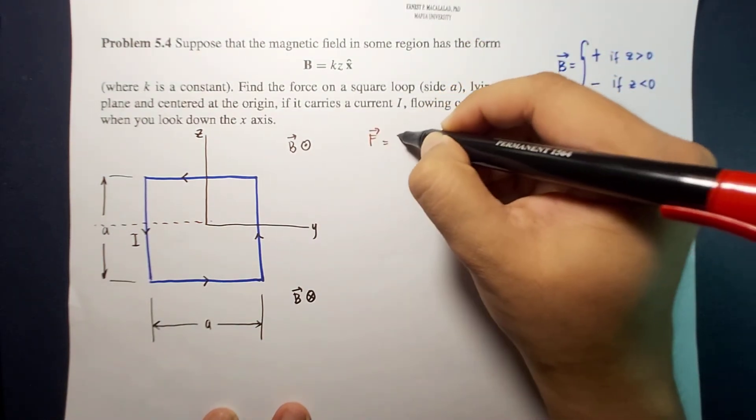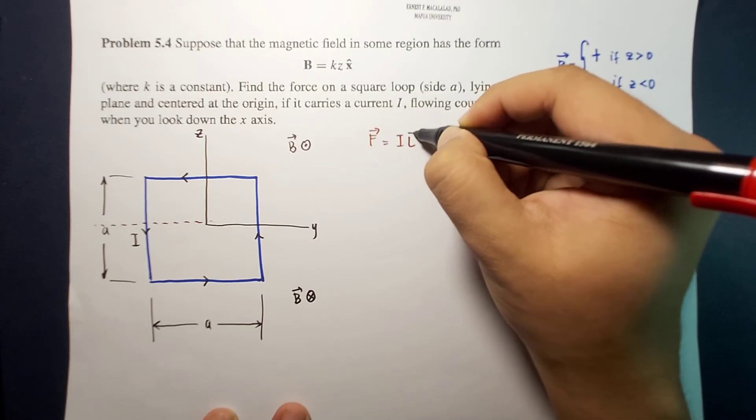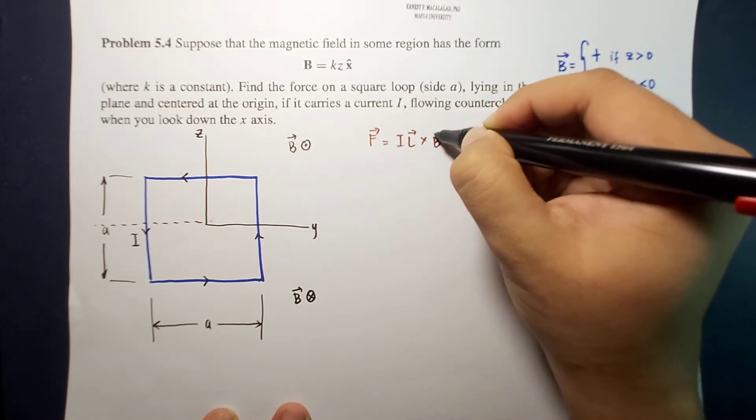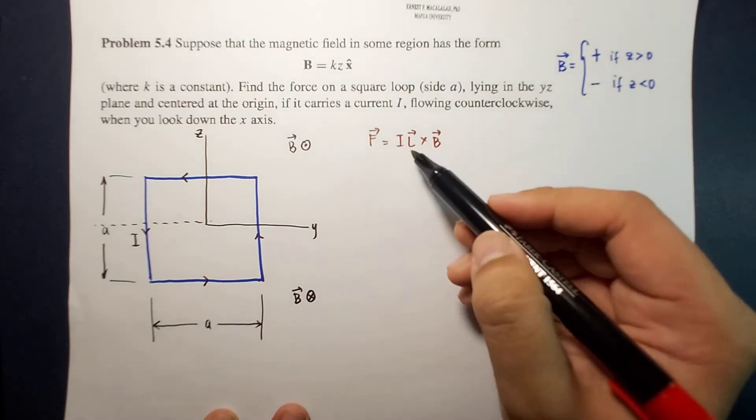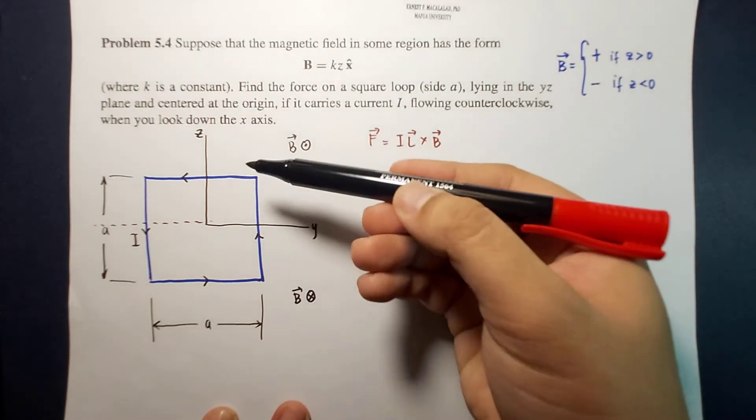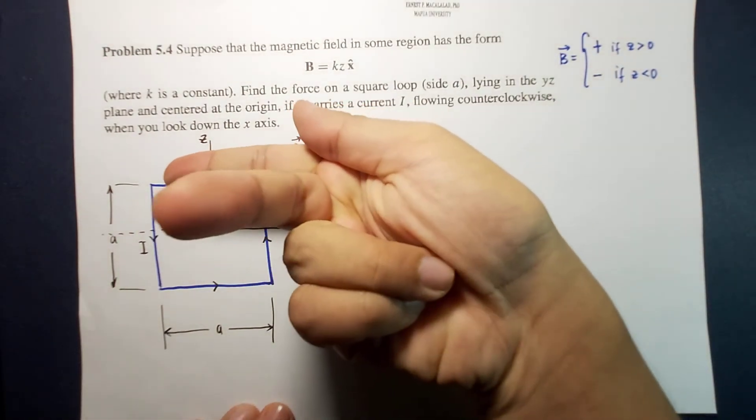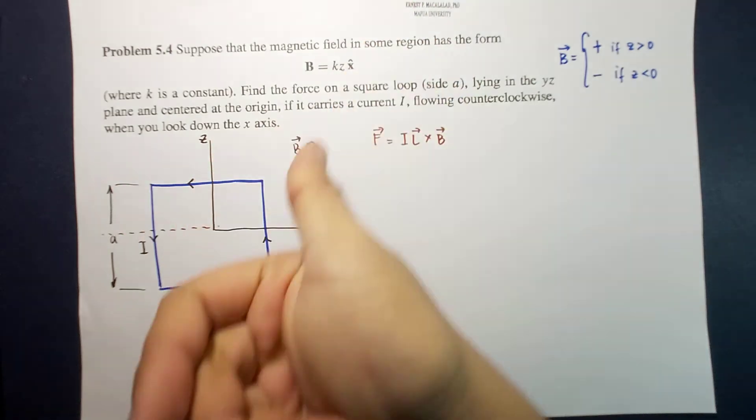So remember that F is equal to I L cross B. So L is the direction of I, then you cross it with B. So I cross B, F is upward. So this is your F for the top.